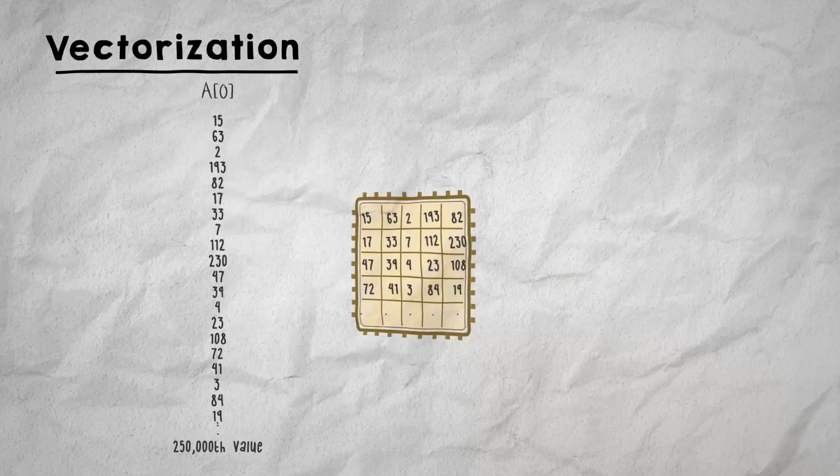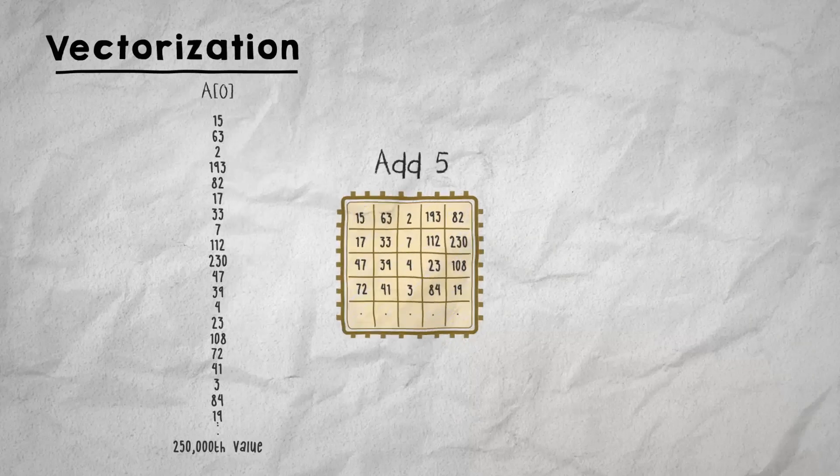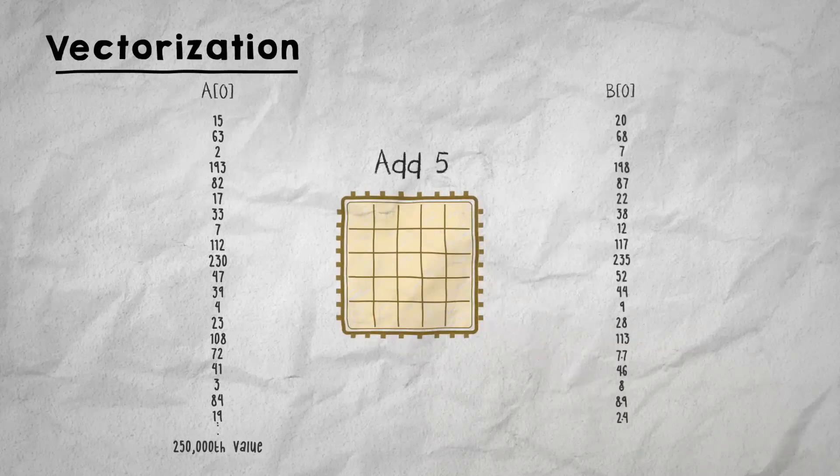Notice how with vectorization, the same instruction of ADD5 is being applied to multiple pieces of data at the same time. This is orders of magnitude faster than the sequential mode where each piece of data was handled in sequence.